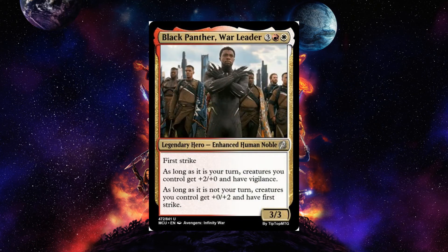Black Panther War Leader is a five-cost red and white legendary hero enhanced human noble 3-3 with first strike. As long as it's your turn, creatures you control get +2/+0 and have vigilance. As long as it's not your turn, creatures you control get +0/+2 and have first strike — so they attack strong and block better. He is definitely the war leader, and this is a very powerful card when you consider the goals of both sides of the Avengers versus Thanos war.